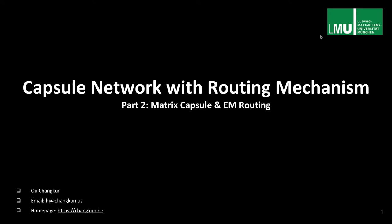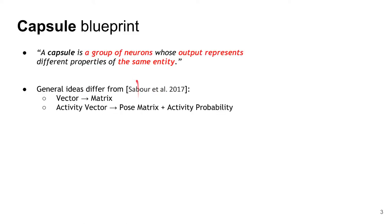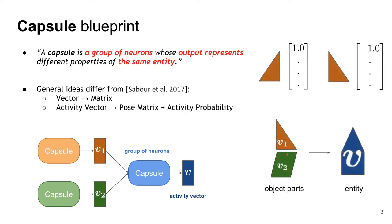Hi everyone. This time we are going to talk about capsule network with EM routing. In part 1, we already know what a capsule network is. Basically it is a group of neurons whose output is a vector — it takes vector in and outputs another vector. We call all of these vectors our activity vector. In the original capsule network paper, they talk about vectors representing entity parts, where the same colored vectors represent object parts, and with v1 and v2 you have the same entity — for example, a house.